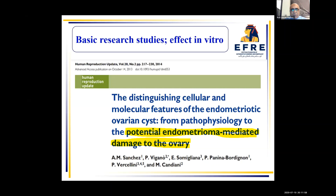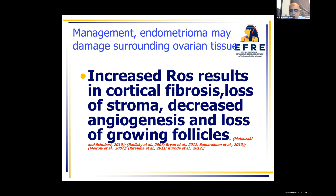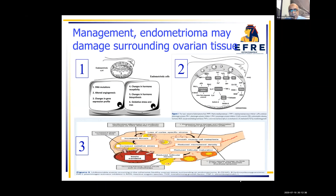Basic research indicates a potential mediated damage to the ovary induced by endometrioma. This damage originates from changes in the endometrioid tissue surrounding the endometrioma, with the resultant accumulation of toxic material, iron, and other metalloproteinases inside the cyst. And because the cyst wall is thin, this content will leak to the ovary and induces fibrosis in the cortical tissue of the ovary.